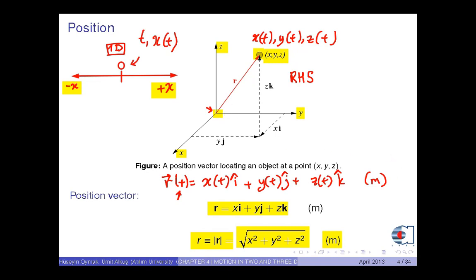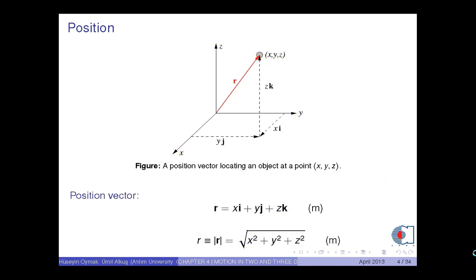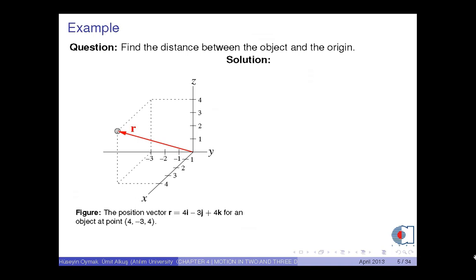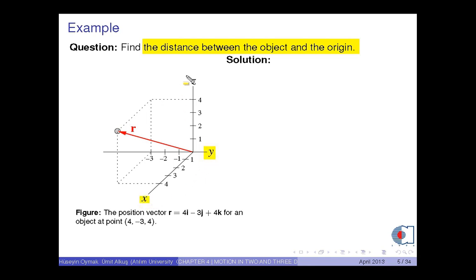Okay, let's solve a simple problem. Consider an object whose location is specified according to this right-handed rectangular coordinate system. We are asked to find the distance between the origin and the object. To solve this problem, we find carefully the x, y and z components of this point, which are determined as 4, minus 3 and 4.